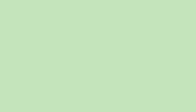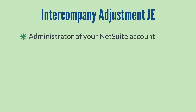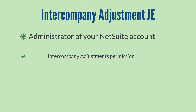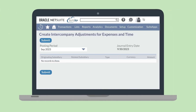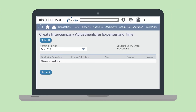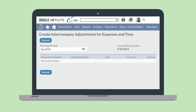You can create Intercompany Adjustments if you either are the administrator of your NetSuite account or have the Intercompany Adjustments permission, as well as access to your company's subsidiaries. To create an Intercompany Adjustment journal entry, navigate to Transactions, Financial, Create Intercompany Adjustments.